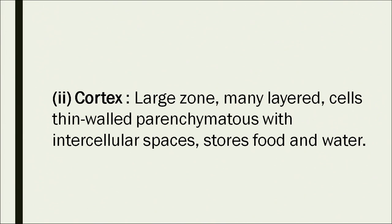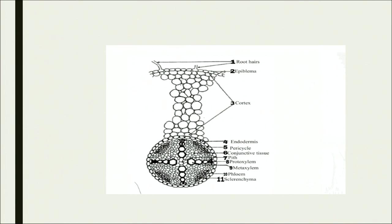The cortex is composed of parenchymatous tissue with a lot of intercellular space, and it can store food and water. Root hairs emerge from the epiblema, the outermost layer, and are generally single-celled — they increase the absorption area of the root. The cortex, number 3 in the figure, has multi-layers of thin-walled cells with lot of intercellular space. Its main function is storage of food and helping in conduction of water and minerals.